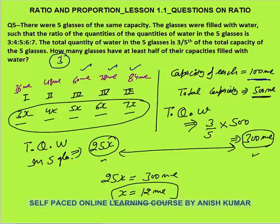That was all about ratio and proportion lesson 1 — questions on ratio. The objective of this lesson was to solve questions in the least possible time without cramming or memorization of formulas, only with common sense, concept, and simplification speed. Thank you.